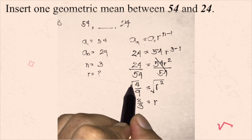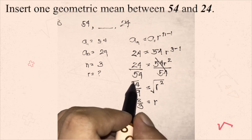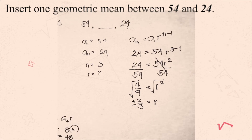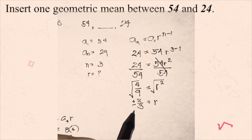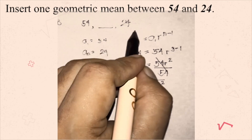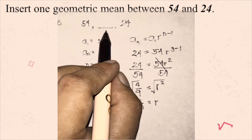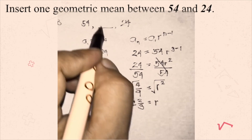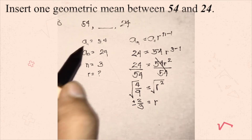However, since r is squared, we should consider both roots: positive 2/3 and negative 2/3. We consider both because even if we use the negative ratio, the given terms will not change. So when looking for one geometric mean, we have two common ratios, giving two answers — two geometric means.